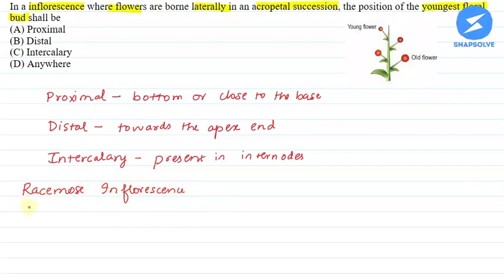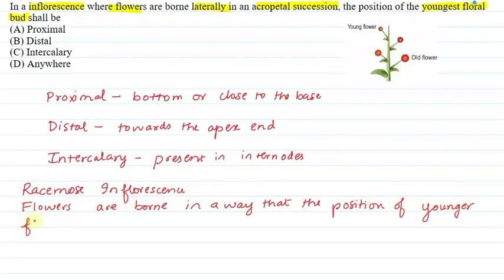what happens is that flowers are born in a way that the position of younger flowers is at the distal end.